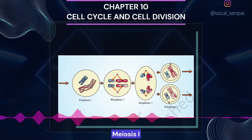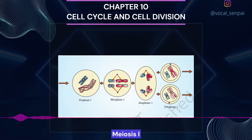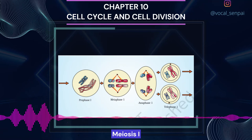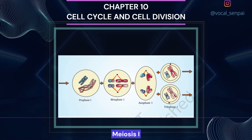The beginning of diplotene is recognized by the dissolution of the synaptonemal complex and the tendency of the recombined homologous chromosomes of the bivalents to separate from each other except at the sites of crossovers. These X-shaped structures are called chiasmata. In oocytes of some vertebrates, diplotene can last for months or years. The final stage of meiotic prophase I is diakinesis, marked by terminalization of chiasmata. During this phase, chromosomes are fully condensed and the meiotic spindle is assembled to prepare homologous chromosomes for separation. By the end of diakinesis, the nucleolus disappears and the nuclear envelope also breaks down. Diakinesis represents transition to metaphase.